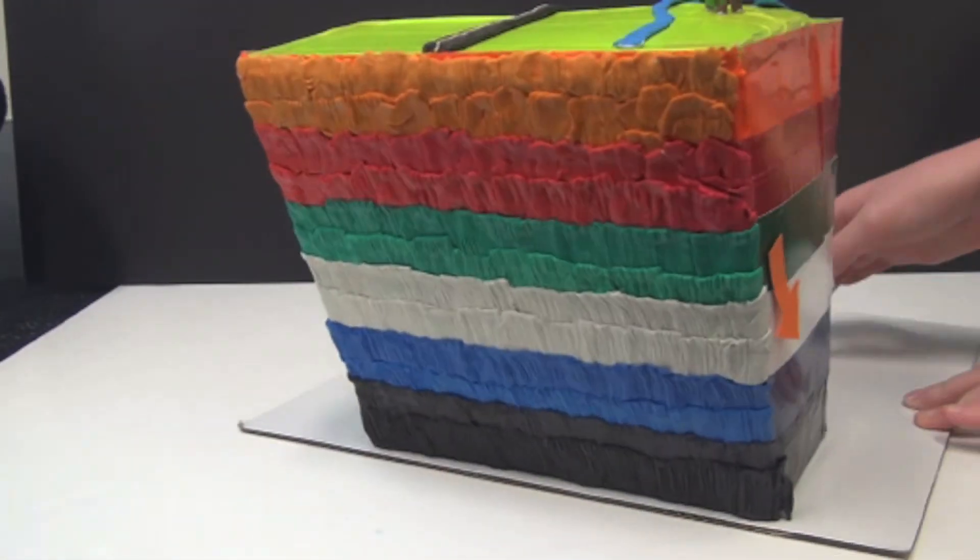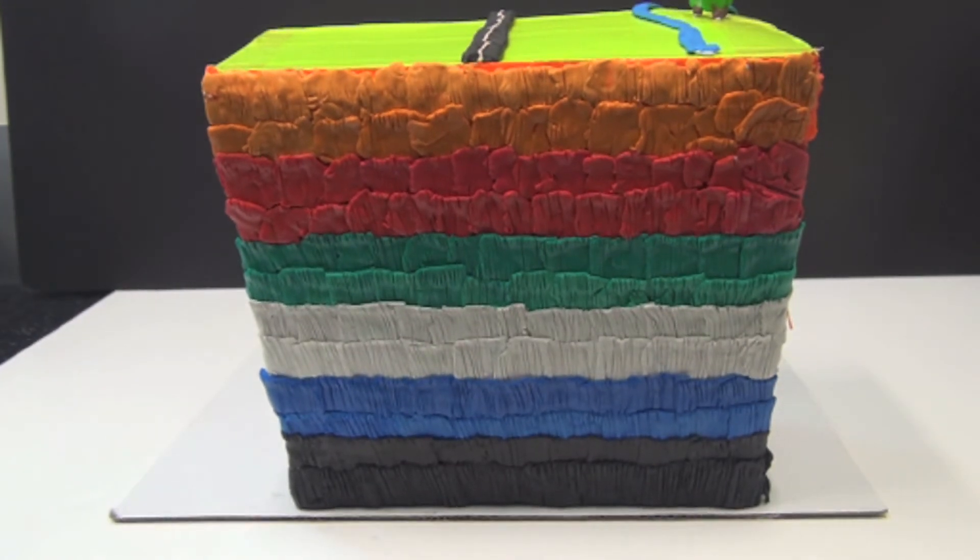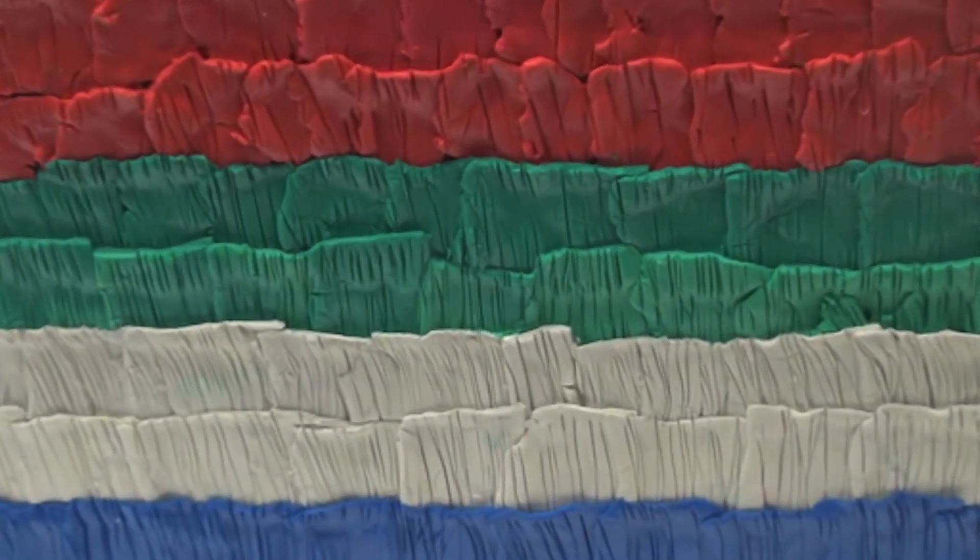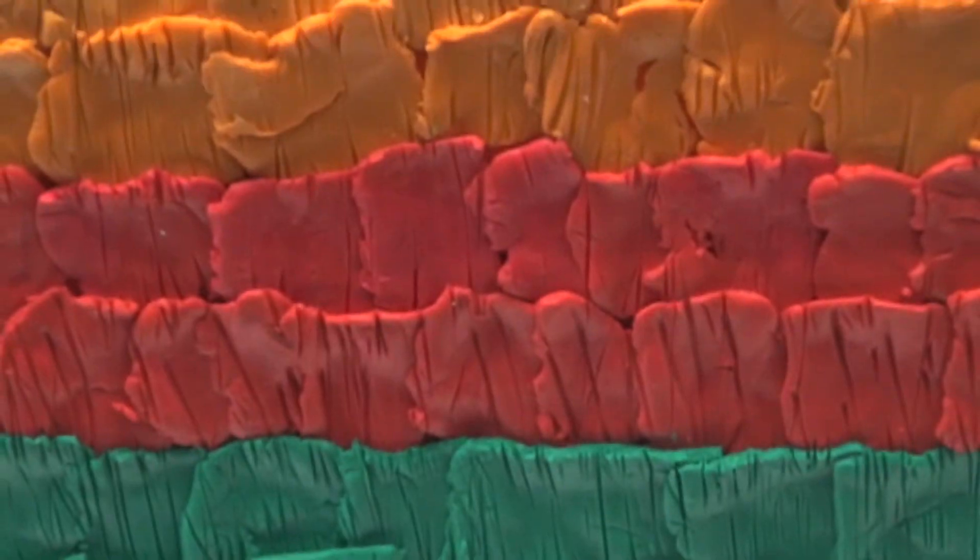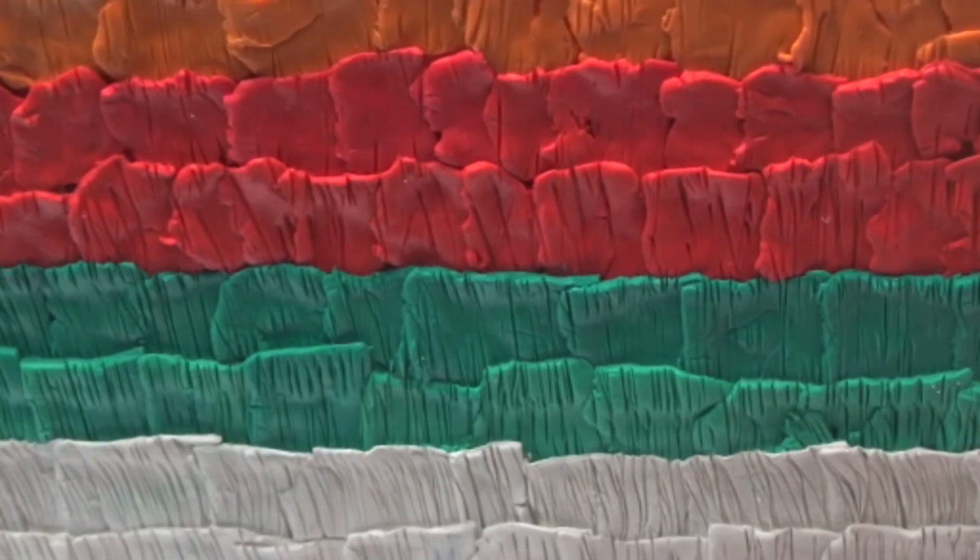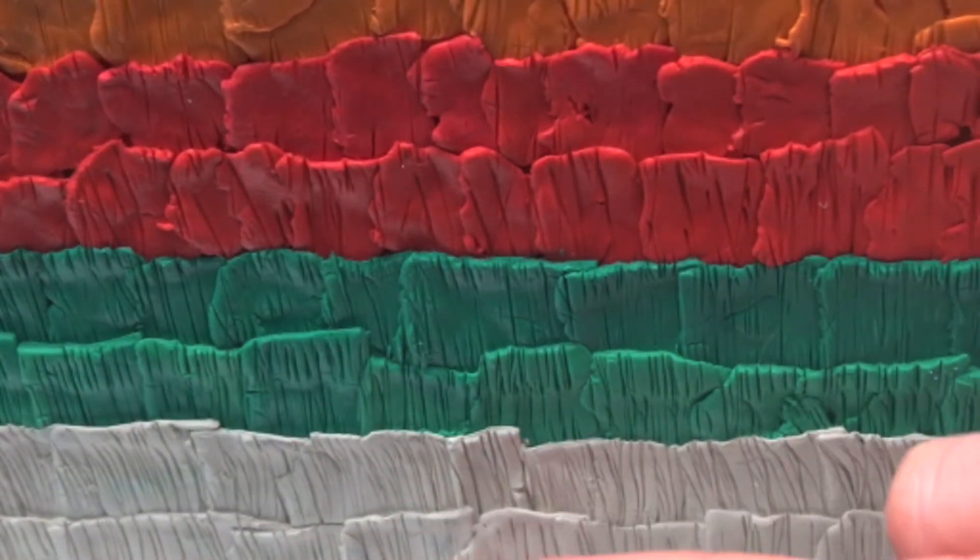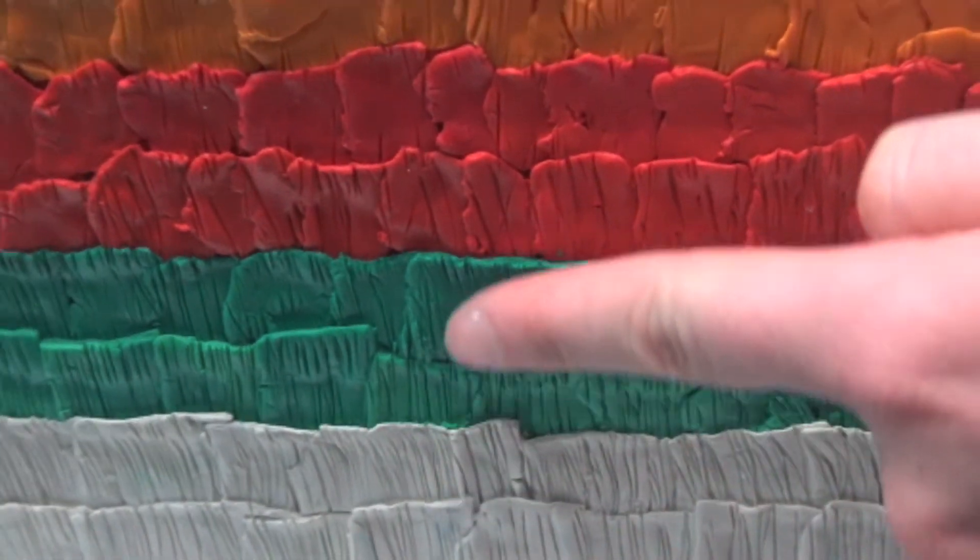These are slicken fibres or steps as they are more commonly known. They are formed when mineral fibres grow during the displacement of the fault.